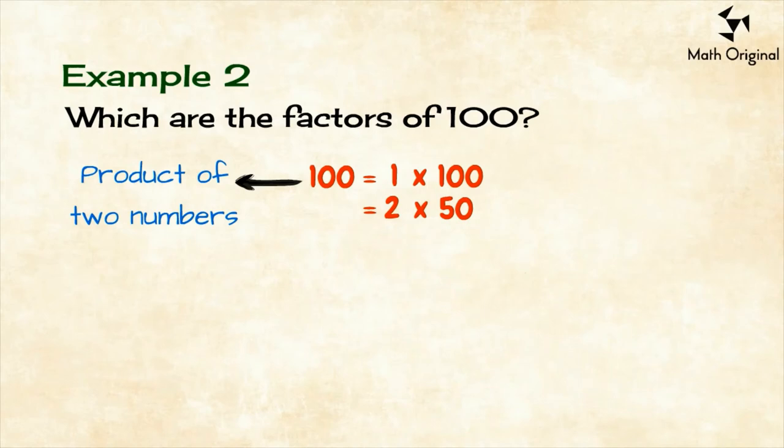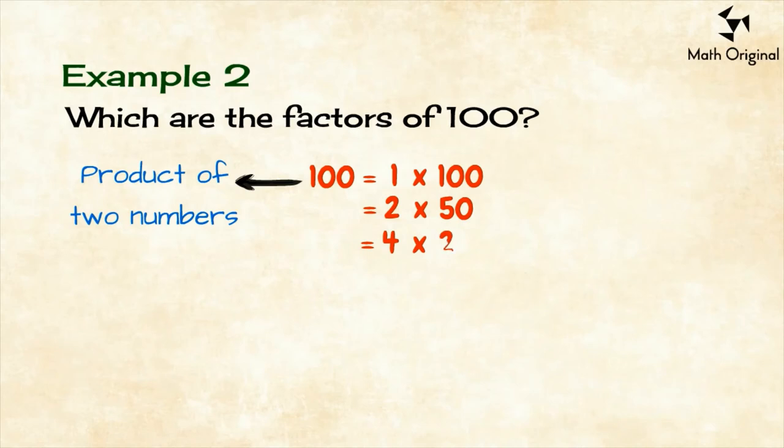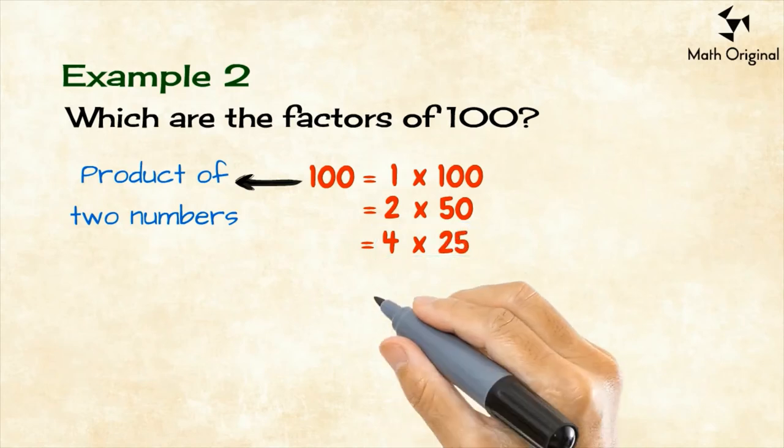What about 4? When we divide 100 by 4, we get 25 without a remainder. So, we get 100 equals 4 by 25.